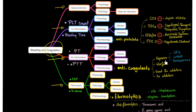Anticoagulants — we have four options: heparins with an S, warfarin — only one, no S — direct factor 2A inhibitors or direct thrombin inhibitors such as the famous argatroban, and factor 10A inhibitors. Why did I say heparins as a plural? Because it includes three things: the unfractionated heparin, the good old one; the low molecular weight heparin; and the fondaparinux.